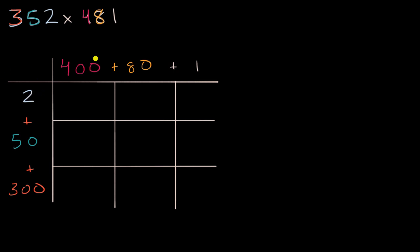Now, first we'll multiply 2 times 400 plus 80 plus 1. So 2 times 400 is 800. 2 times 80 is 160. And then 2 times 1 is 2.